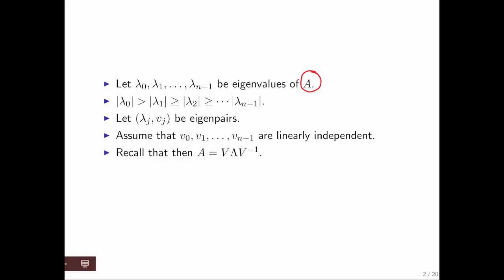We start with an arbitrary matrix A and assume that it has n eigenvalues. We assume that lambda 0 is the eigenvalue that is largest in magnitude — largest in absolute value. All of the other eigenvalues are smaller, though some may be equal to each other. Importantly, the second largest eigenvalue in magnitude must not equal the largest in magnitude.